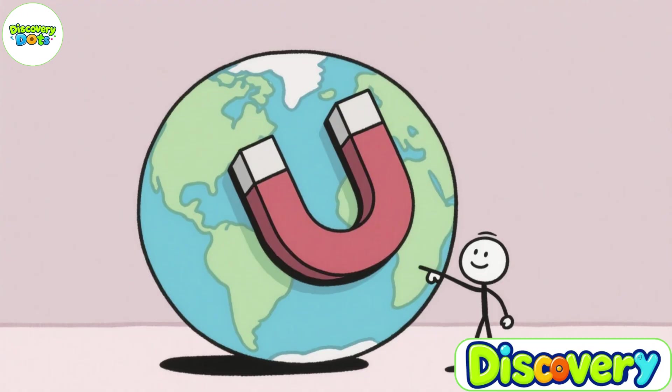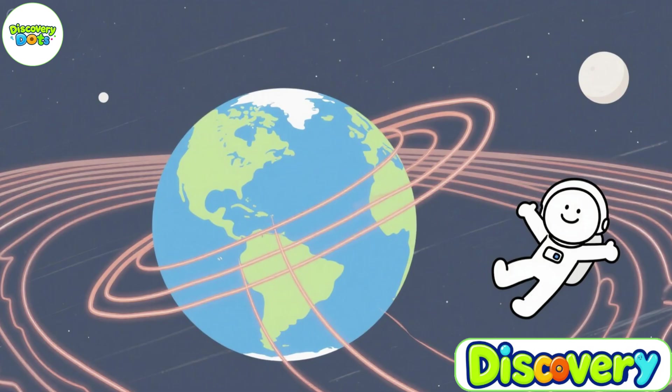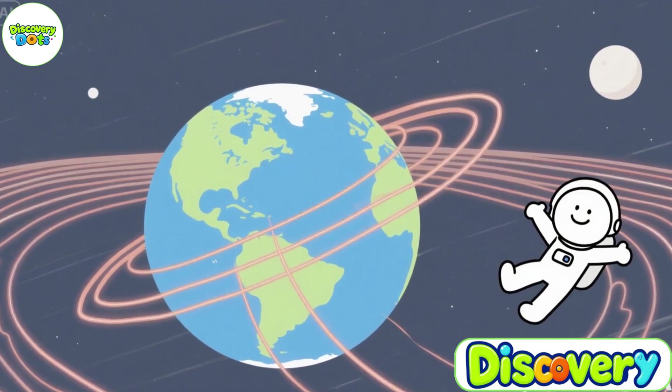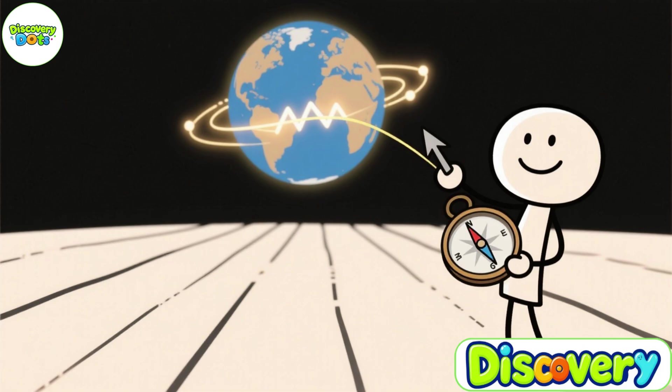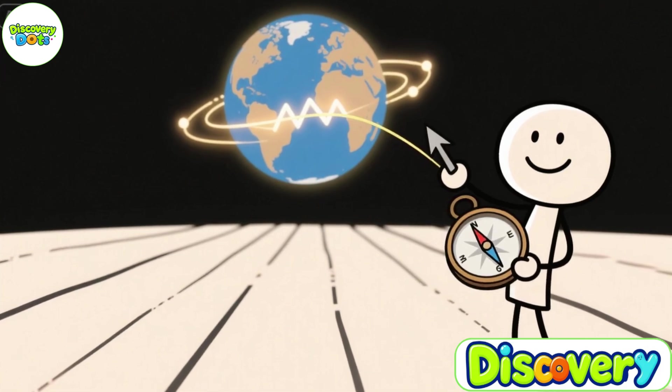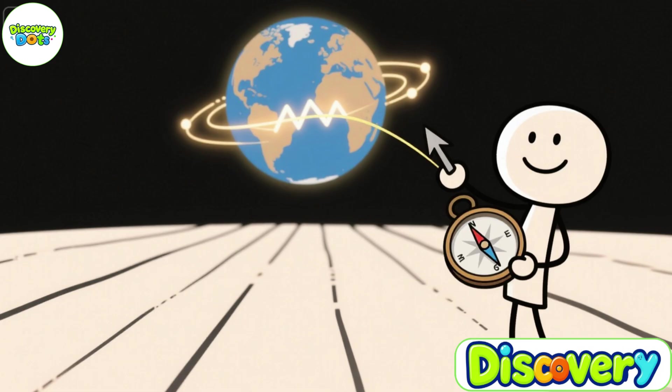You can imagine Earth as a giant sphere with a bar magnet running through its center. Magnetic field lines spread out from the poles surrounding Earth and extending into space. It is this magnetic field that serves as the guide for the tiny needle inside the compass.